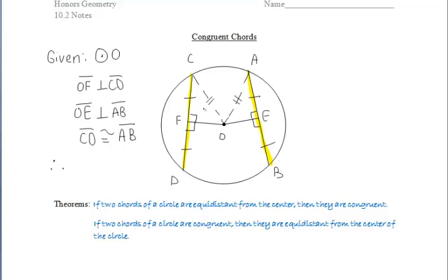Then let's draw in our radii CO and AO. We know that radii of a circle are congruent. So we can say that those two triangles, COF and AOE, are congruent by HL.